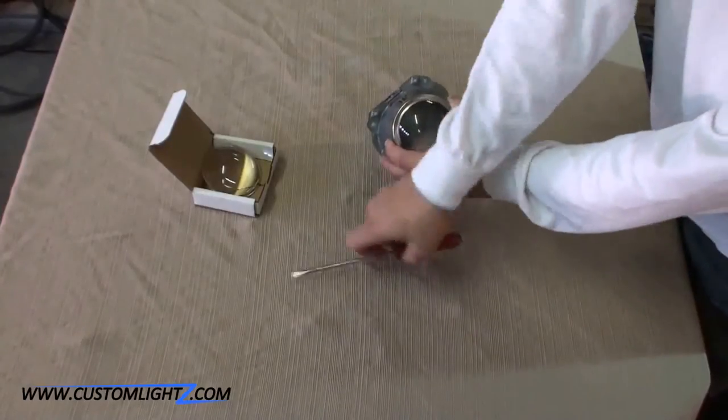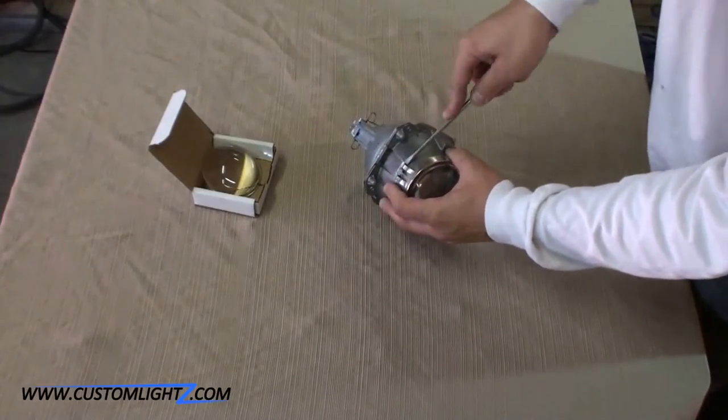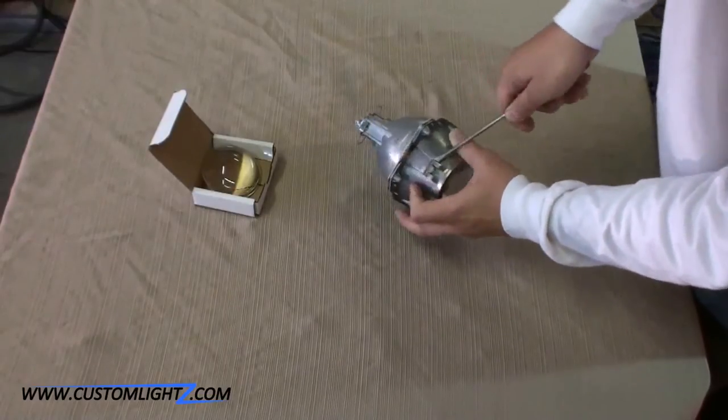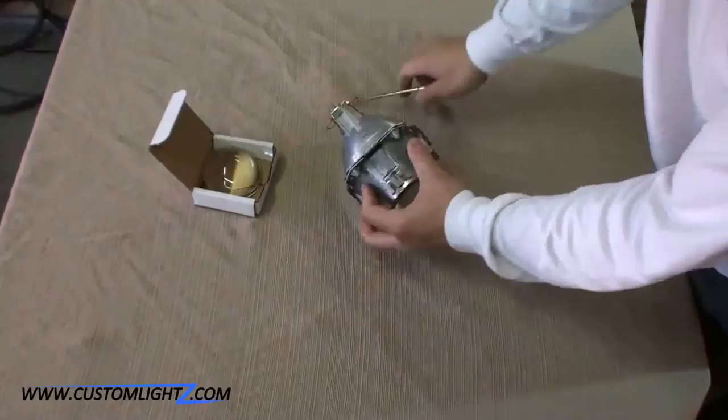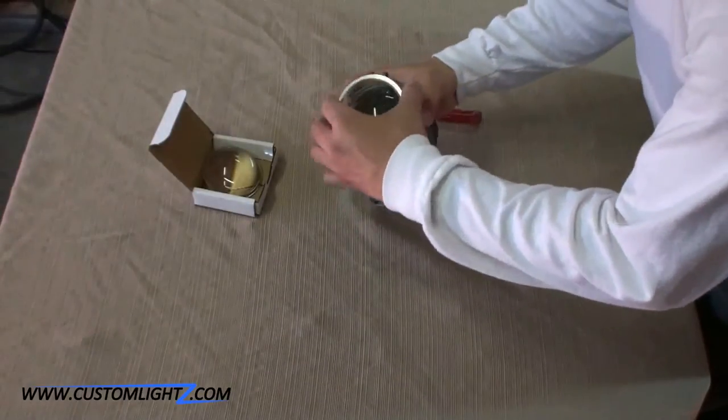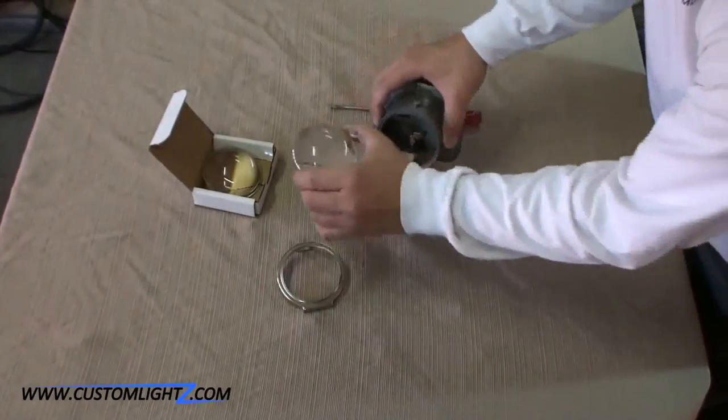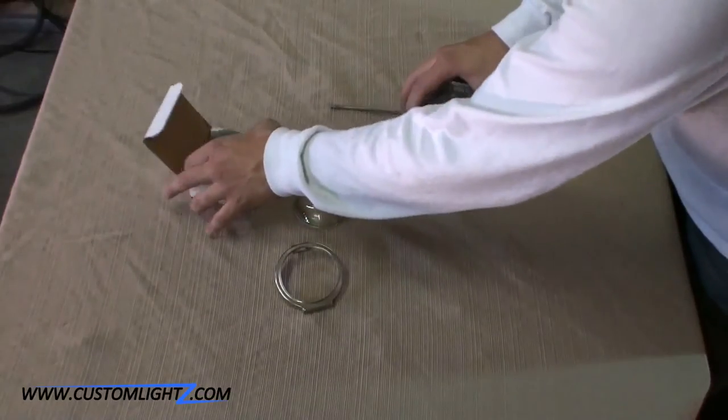So in order to get the lens out, you just have to pop this lens holder with the flathead. You see this little tab here? Just simply pry it out. This whole thing comes out. Pop this Fresnel lens out.